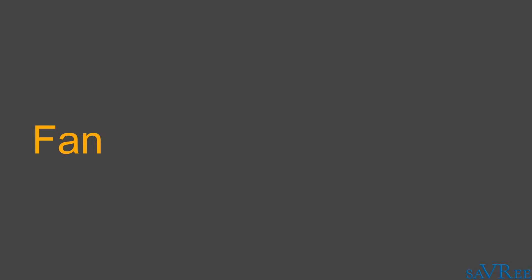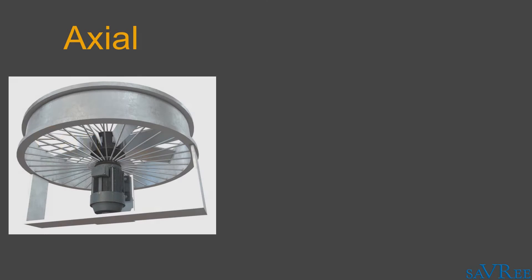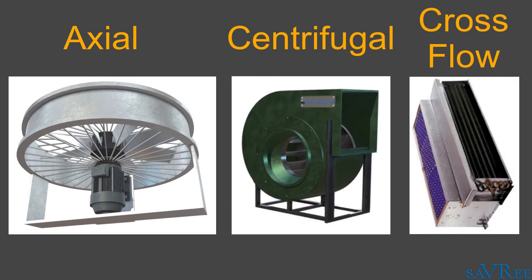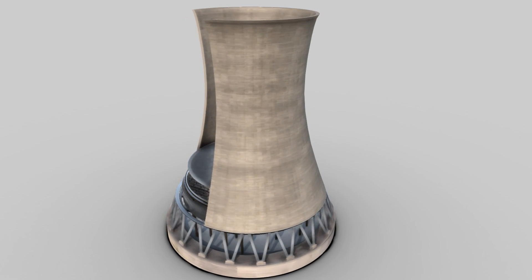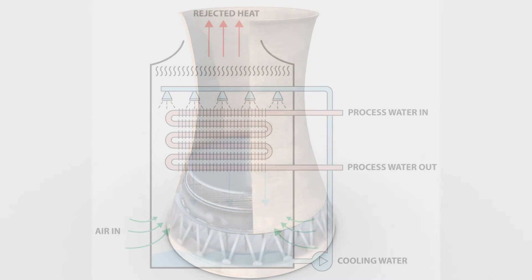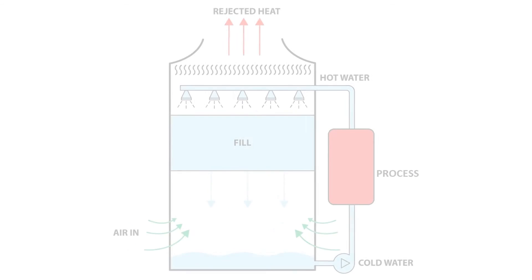Fan. Fans are used to force or induce airflow through the cooling tower and are available in several different designs. The three most common fan designs are the axial, centrifugal, and cross flow types. Fans are chosen for a particular application based on characteristics such as desired volumetric flow rate, pressure differential across the fan, and the space available. If you would like to learn more about natural, induced, or force draft cooling towers, counter and cross flow cooling towers, or direct and indirect cooling towers, check out some of the other videos available in the video description area.